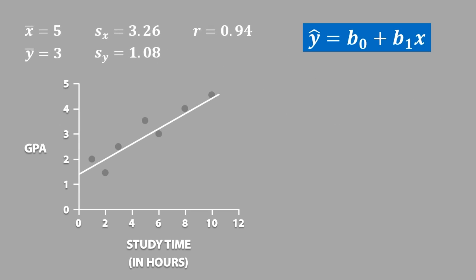We need to calculate these values because b0 is equal to y-bar minus b1 times x-bar, and b1 is equal to r times sy divided by sx. When we solve for the value of b1, we get 0.311, and when we solve for the value of b0, we get a value of 1.45.